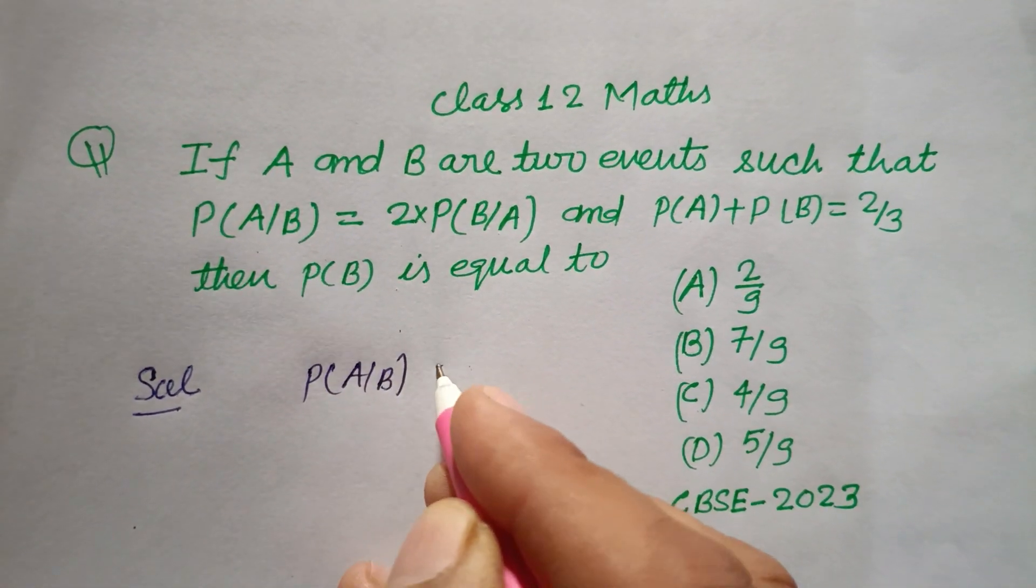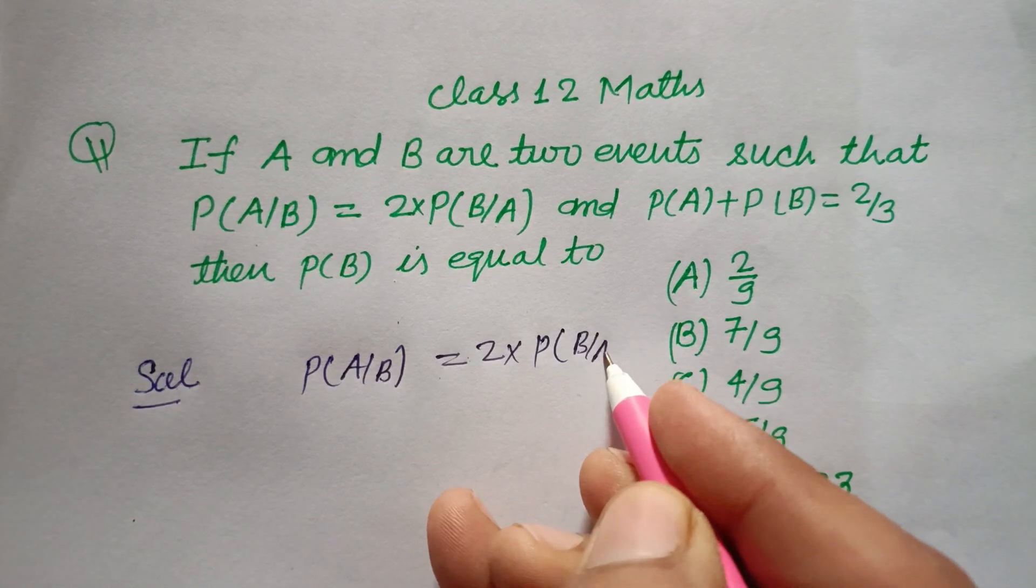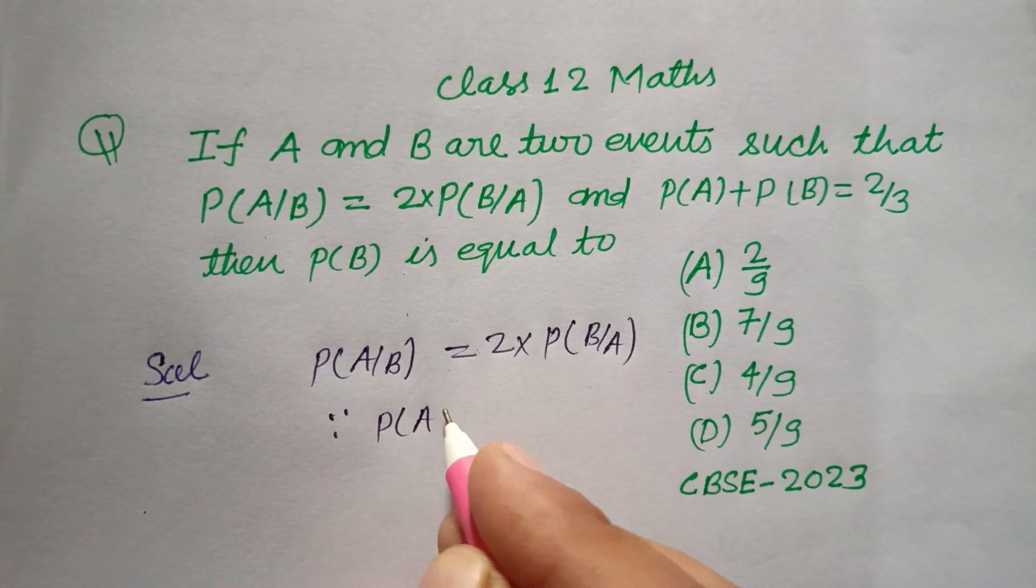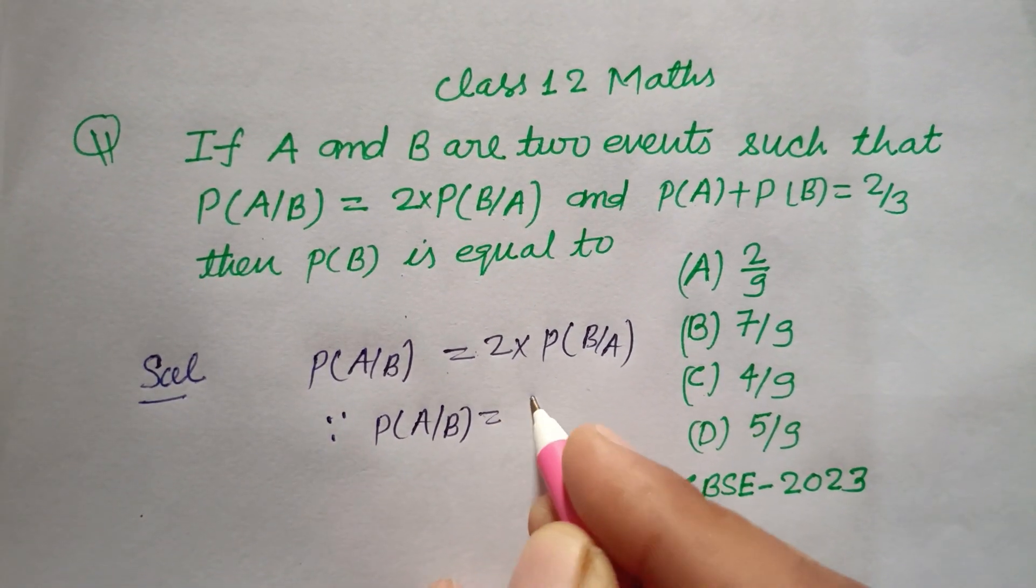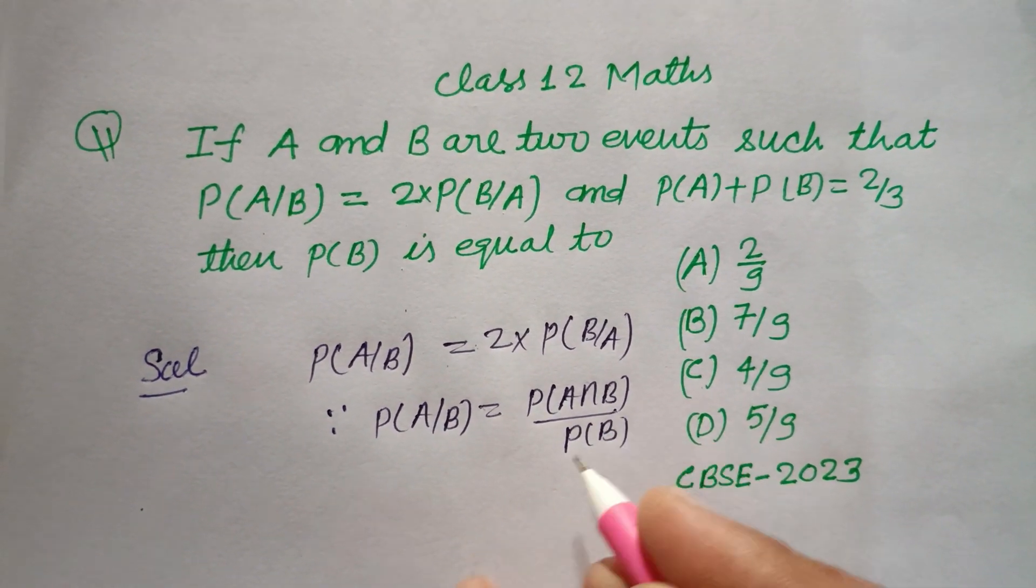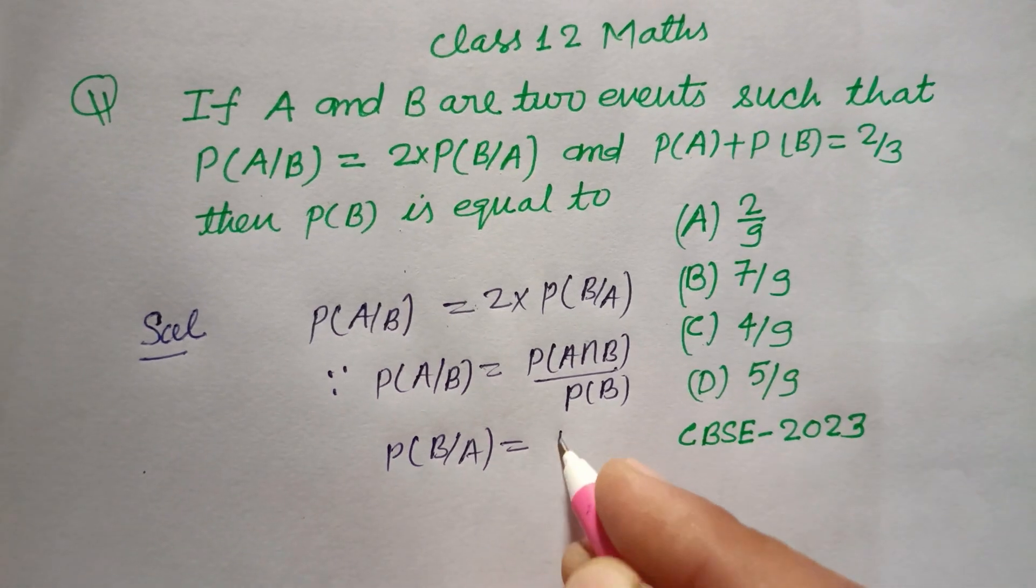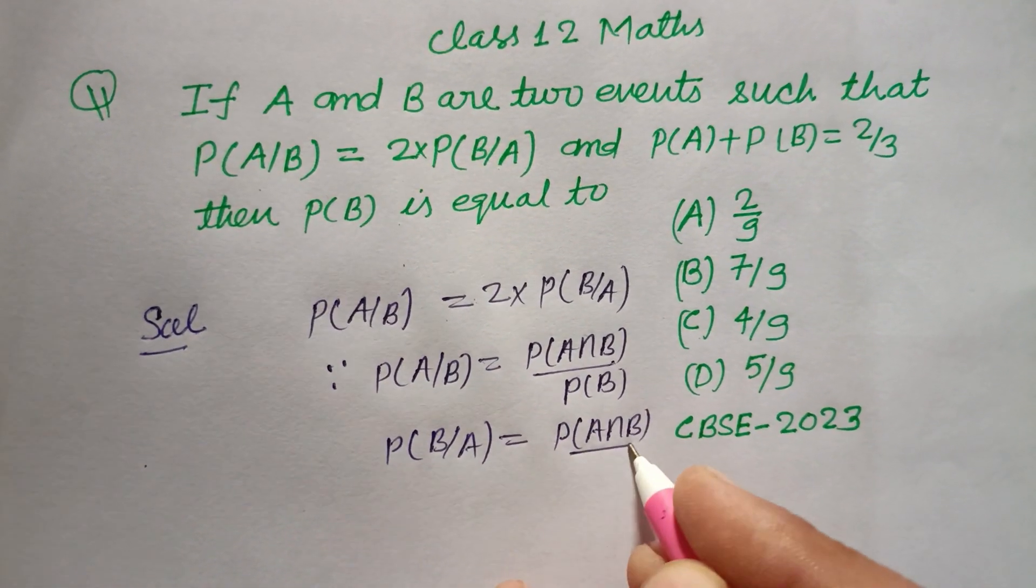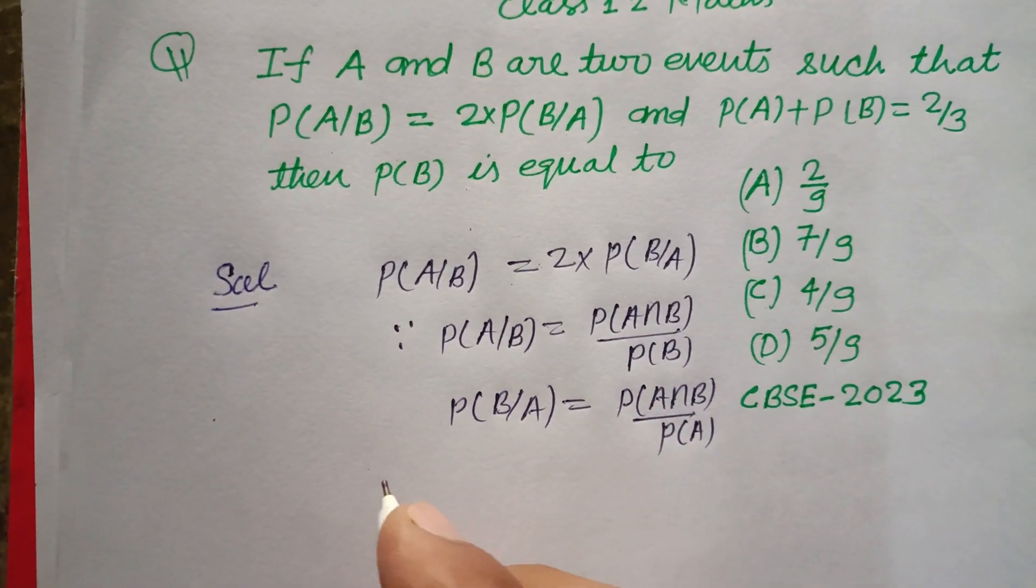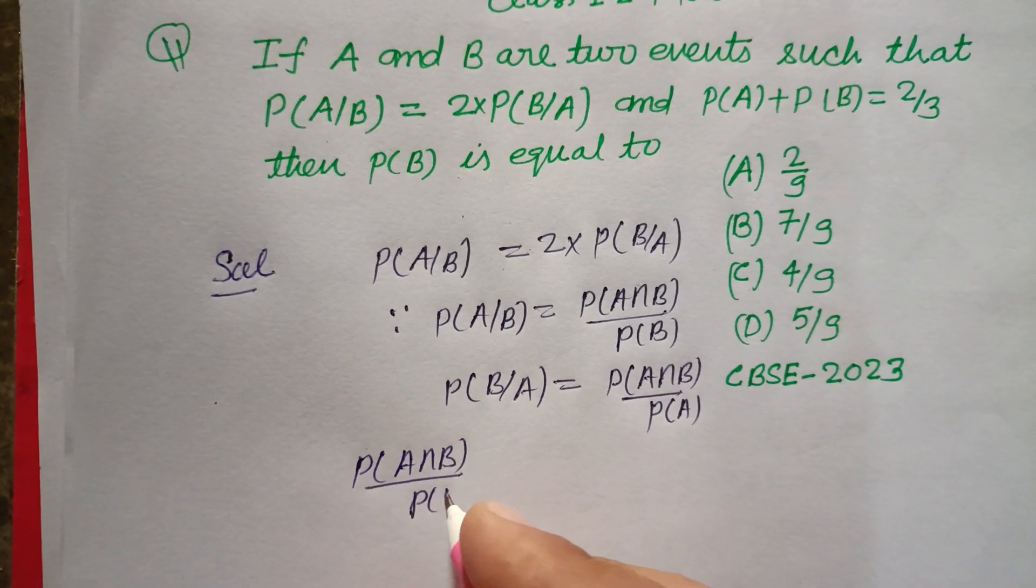Here it is given that P(A|B) = 2 times P(B|A). You know that P(A|B) is P(A∩B)/P(B) and P(B|A) equals P(A∩B)/P(A). So using this here, P(A∩B)/P(B) equals two times P(A∩B)/P(A).